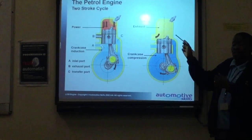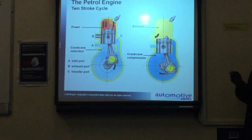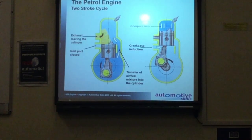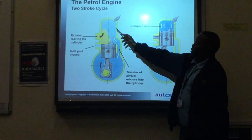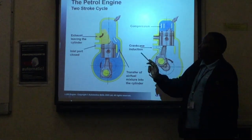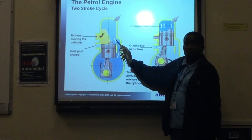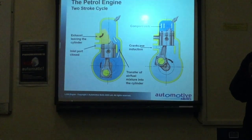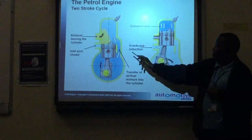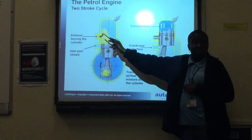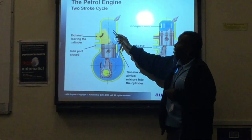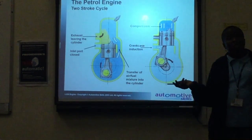As the piston continues to move down, exhaust gases leave. A disadvantage of the two-stroke engine is that when the exhaust port is open, the transfer port is also open, so there is a tendency that the new air-fuel mixture will mix with the exhaust gases. As a result, a two-stroke engine has high emissions, because some of the fresh petrol entering the cylinder is leaving through the exhaust port before it can be burned.